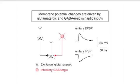Individual neurons of the neocortex receive both excitatory glutamatergic input and inhibitory GABAergic input, and the neuronal computation occurs through the integration of these two signals.